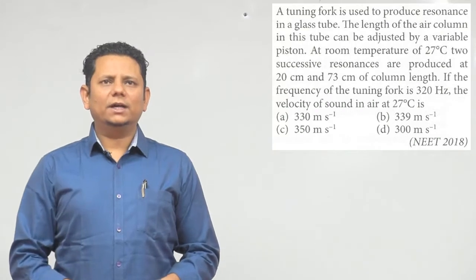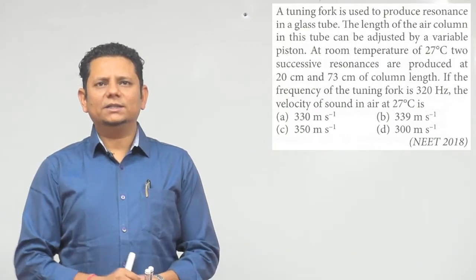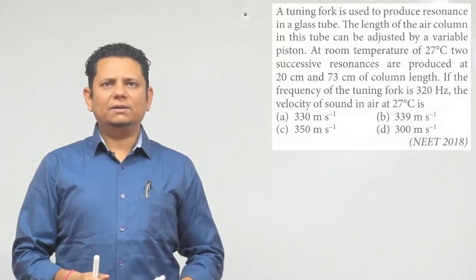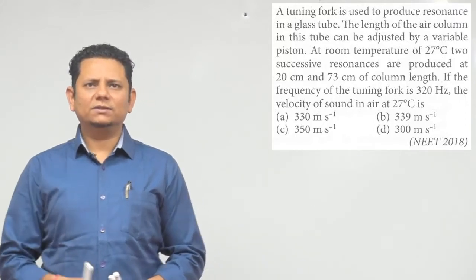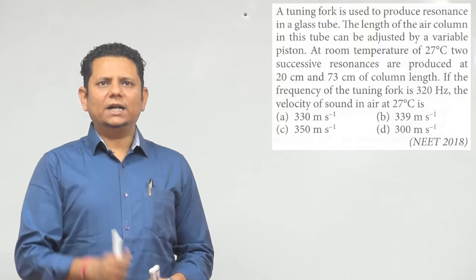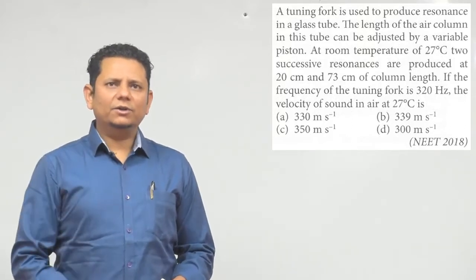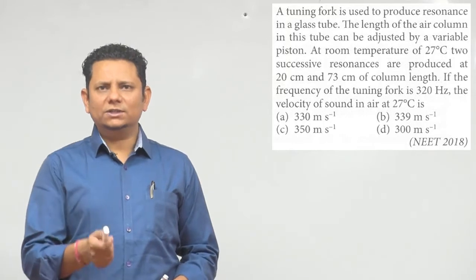The next question says a tuning fork is used to produce resonance in a glass tube. The length of the air column in the tube can be adjusted by a variable piston. At room temperature of 27 degrees Celsius, two successive resonances are produced at 20 centimeter and 73 centimeter column length. If the frequency of the tuning fork is 320 Hertz, the velocity of sound in air at 27 degrees Celsius is...